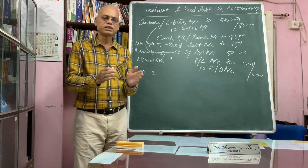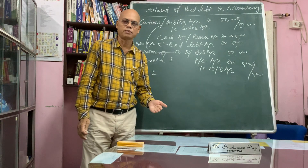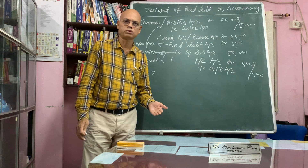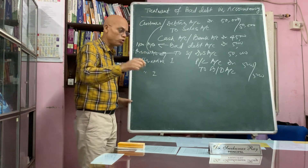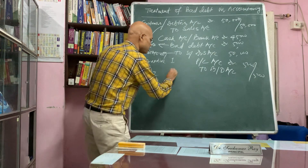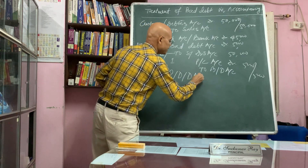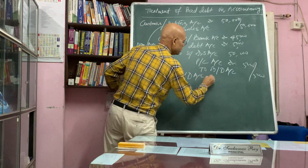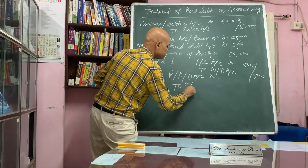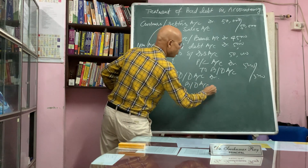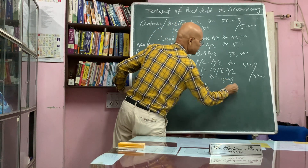Method two: if a provision for doubtful debts account is already maintained, then bad debt may be closed through that provision account. The entry is: provision for doubtful debts account debit to bad debt account.